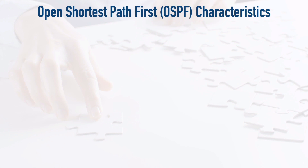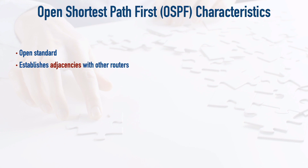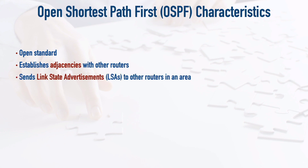OSPF is an open standard, so it's not vendor proprietary. Routers that are exchanging their information with one another have formed adjacencies, and we can also form neighborships with OSPF — there's a difference between those two, which I'll distinguish in a moment. The information exchanged between routers is in the form of LSAs, link state advertisements. Those are sent between routers to educate one another about what networks are available and how things are interconnected. Those LSAs are grouped together within each router to form the link state database — the map of the network.